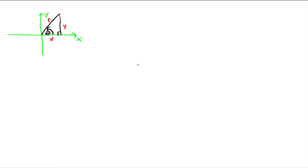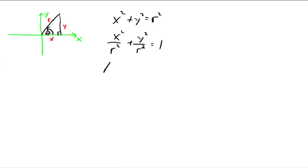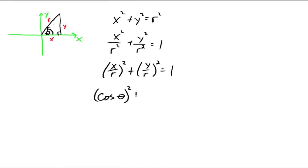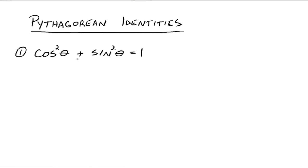There's your triangle again. Since we have a right triangle, we know that x squared plus y squared equals r squared. So if we divide everything by r squared, you get x squared over r squared plus y squared over r squared equals 1. That's the same thing as x over r, all squared, plus y over r, all squared, equals 1. And x over r is defined to be cosine, so we have cosine squared theta plus sine squared theta equals 1. These are called the Pythagorean identities.